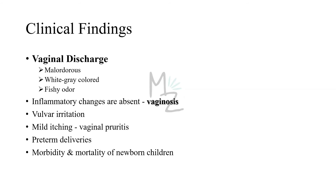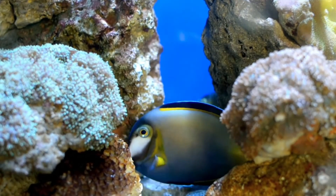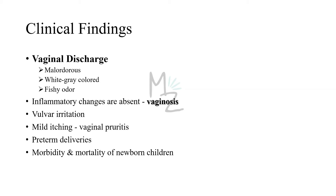Clinical findings: Bacterial vaginosis is characterized by vaginal discharge that is malodorous (foul-smelling), white or grey in color, with a characteristic fishy odor. Inflammatory changes, as mentioned earlier, are typically absent — which is why it is called vaginosis rather than vaginitis, since 'itis' implies inflammation. There is vulvar irritation present and mild itching may occur, also termed vaginal pruritus. Women with bacterial vaginosis have a high incidence of preterm deliveries, which can increase the morbidity and mortality of newborn children.